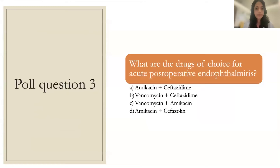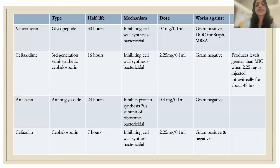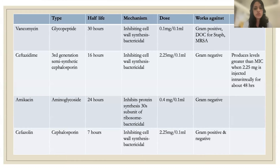Poll question: What are the drugs of choice for acute post-operative endophthalmitis? The correct answer is vancomycin plus ceftazidime. Vancomycin works against gram-positive organisms and is the drug of choice for Staphylococcus and MRSA. Ceftazidime works against gram-negative organisms, producing levels greater than the MIC when 2.25 mg is injected intravitreally for about 48 hours. Amikacin is avoided due to macular toxicity; cefazolin is less effective than ceftazidime against gram-negative bacteria.